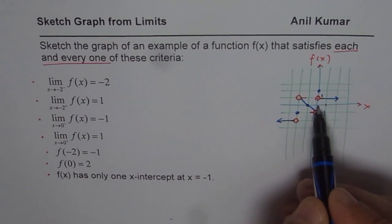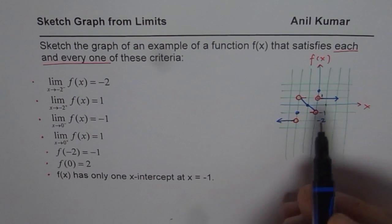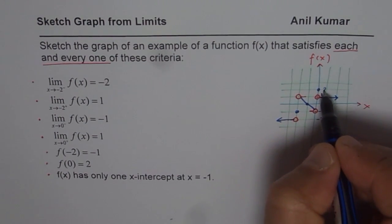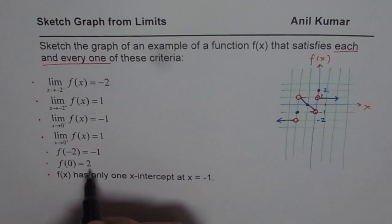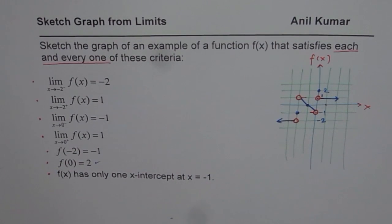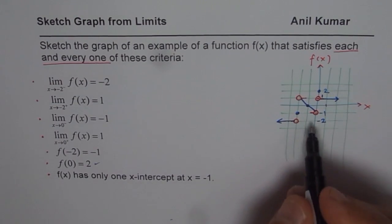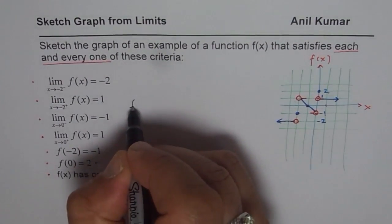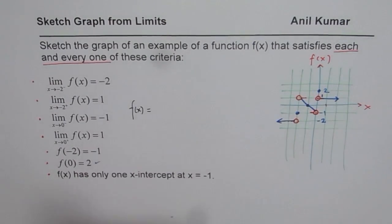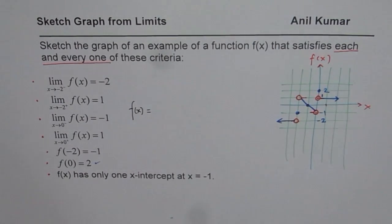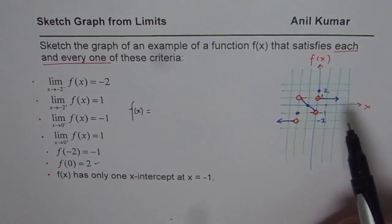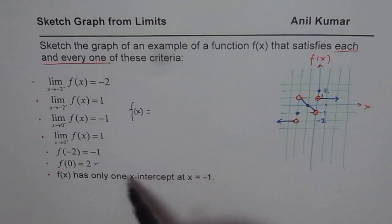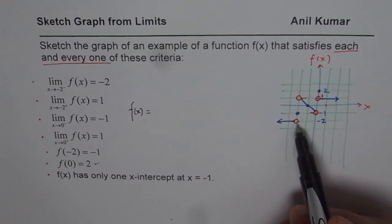However, the value of the function at x = 0 is 2, so there is a filled circle at (0, 2). That is how you should sketch the graph step by step. Now let me also write down the equation of the function. We have several different pieces joined together, so this will be a piecewise function.